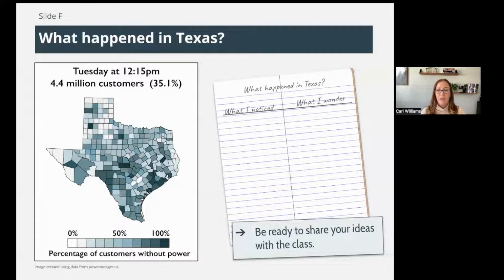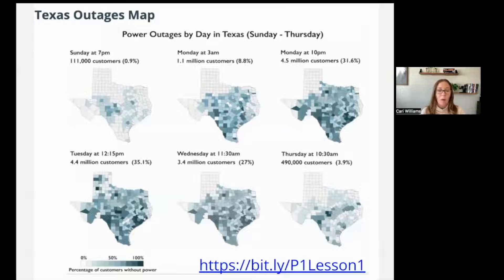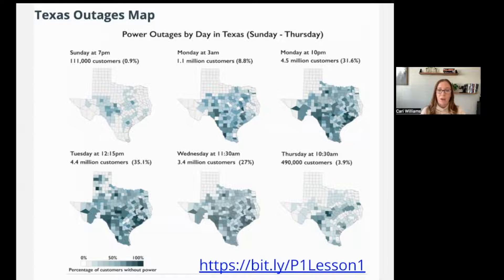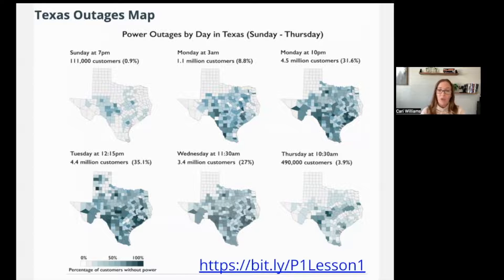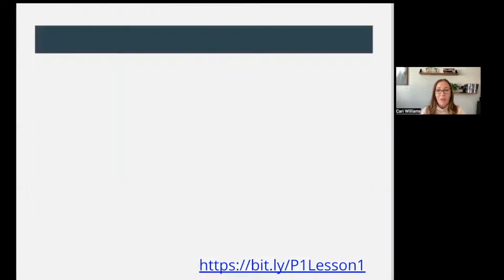There's actually a handout — if you go to the bit.ly link, the P1 Lesson 1 bit.ly link — it's called the Texas Outages Map, and it shows you a timeline of how the power went out. I want you to use this handout and write down what you notice and what you wonder — what questions does this start placing in your head? What are you starting to wonder about, like how did this happen, why is it spreading this way? Go ahead and make a list of what you observe, and push pause to complete this.